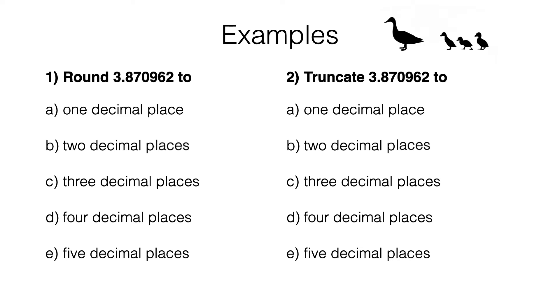Here's what you should have got. That number rounds to 3.9 to one decimal place. It rounds to 3.87 to two decimal places.